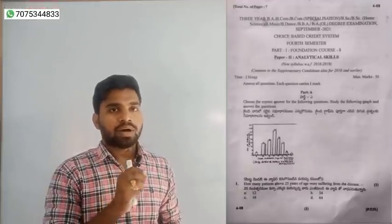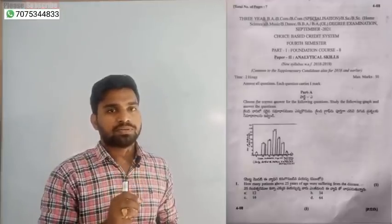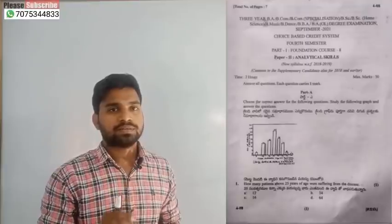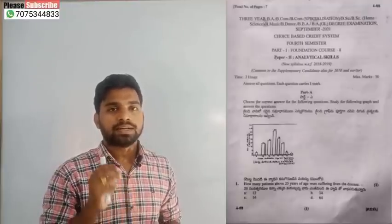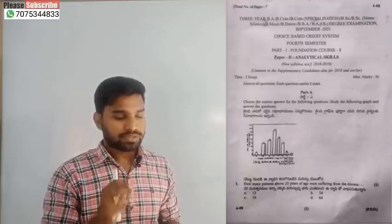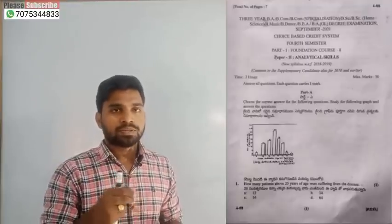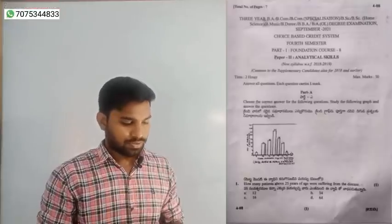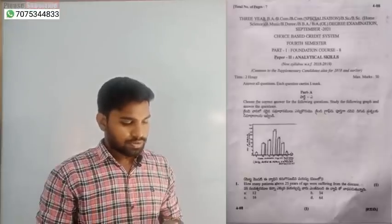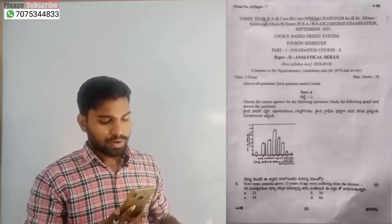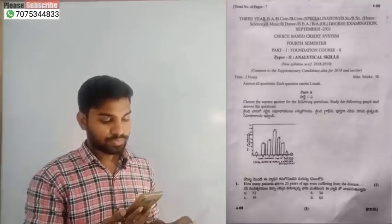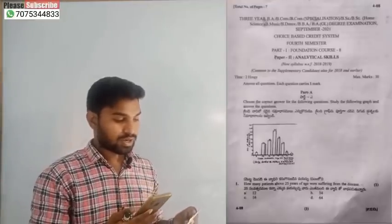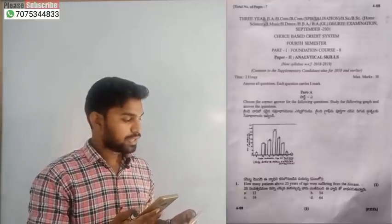If you are talking about answers, then you can explain about the answer. If you have only the answer, then check it out. The first question is a bar graph. The first question answer is 16, so the option is C.